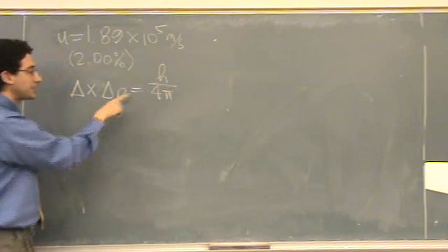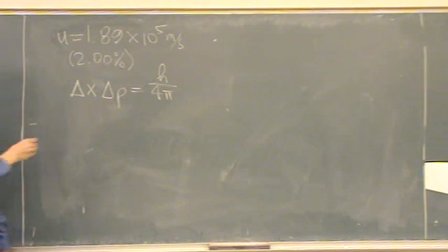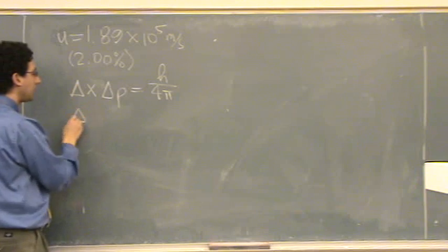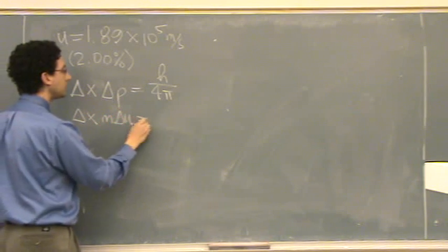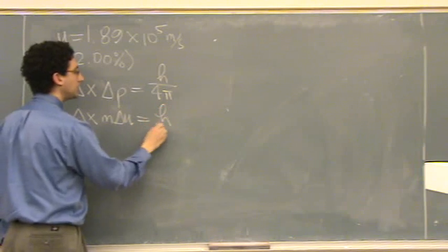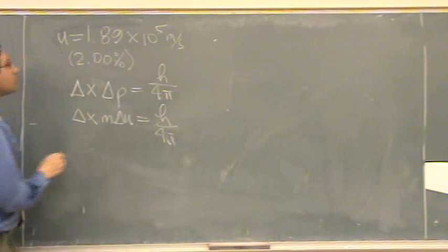And remember, we're going to change it to an equal sign to do our math. And the momentum is just mass times the change in U, H over 4 pi. Well, we want to know position, I believe, in this question.